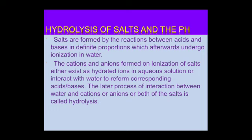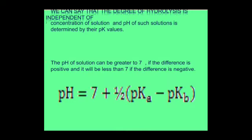Salts are formed by reaction between acids and bases in definite proportions and subsequently undergo ionization in water. The cations and anions formed either exist as hydrated ions in aqueous solution or interact with water to form corresponding acid and base. This latter interaction between water and the cation or anion of the salt is called hydrolysis. The degree of hydrolysis is independent of concentration, and the pH is determined by the pK value — greater than 7 if the difference is positive, less than 7 if negative.